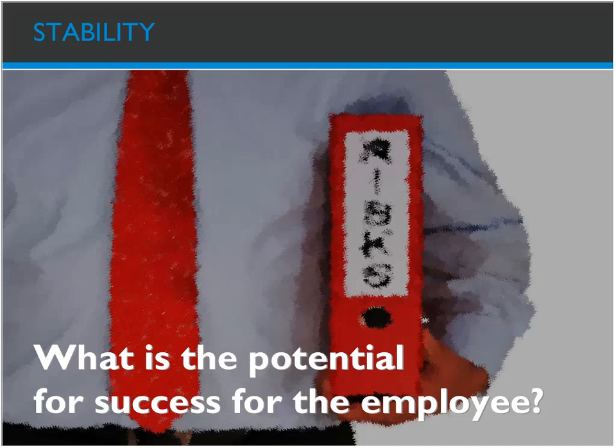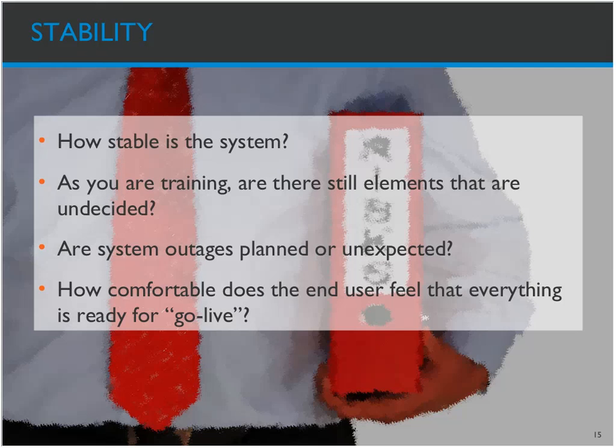We also want to think about stability — what is the potential for employee success? This means more than just how stable is the training solution; it's how stable is the overall solution. We've had many training solutions where customers are putting in a system but it's not ready yet — it's going down frequently, they're putting patches in and making changes right up to go-live. That means your training materials aren't going to be entirely accurate, and there won't be sufficient time to test. Making sure all your information is locked down very early prevents those kinds of last-minute changes.